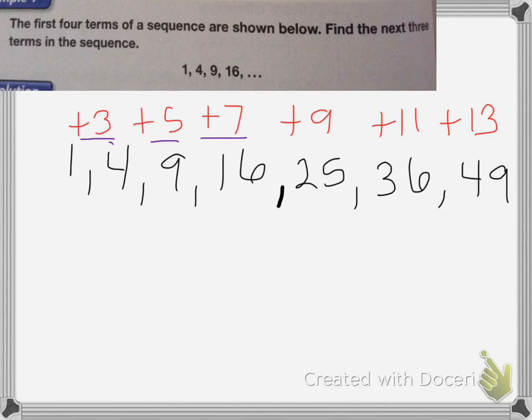The second one is, if you notice, 1, 4, 9, and 16. Those are all perfect squares. Okay, 1 is equal to 1 squared. 4 is equal to 2 squared. 9 is equal to 3 squared. 16 is equal to 4 squared. If I follow this pattern, that means my next number would have to be 5 squared, which is 25.